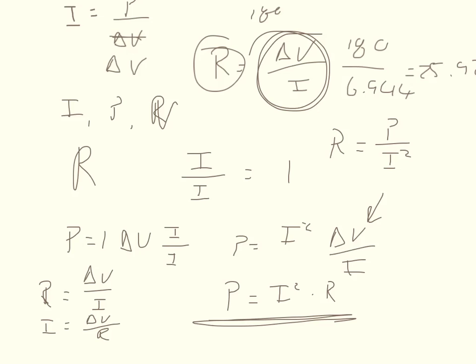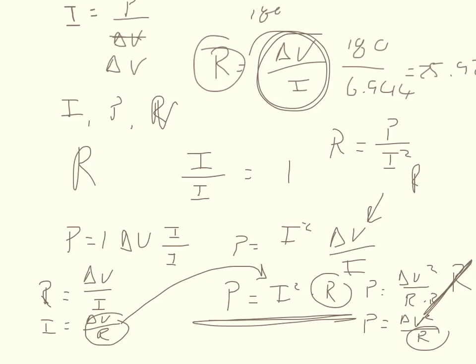We can go ahead and plug this in, so we would get that the power is equal to the potential difference squared over the resistance. That would cancel out and we get that the power is equal to the potential difference squared over the resistance. We can solve for resistance using this formula where the resistance would equal the potential difference squared over the power.